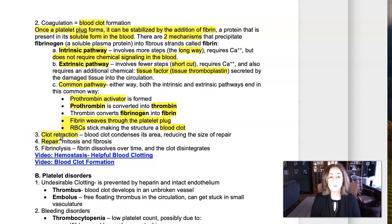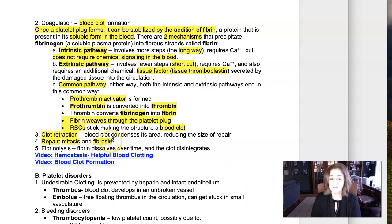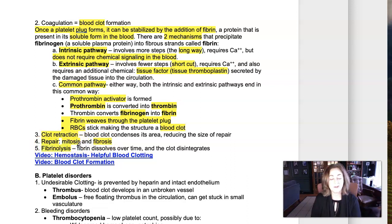Repair occurs just like we learned in AP1. Epithelial cells divide by mitosis, or if it's connective tissue like the dermis, new connective tissue is made — called fibrosis — and that's scar formation. As repair occurs, fibrinolysis also occurs, where the fibrin dissolves over time. The blood clot is not a permanent structure; the fibrin dissolves and the clot disintegrates.